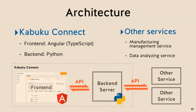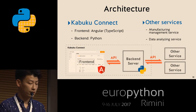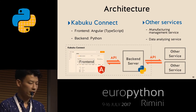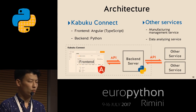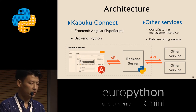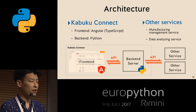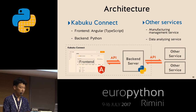This is the system architecture. In CubConnect there are two big parts: the front end implemented with Angular and TypeScript, and the back end implemented with Python. CubConnect also connects to other services such as a manufacturing management service — enabling factories to manage orders, payments, and quotations — and a data analyzing service that processes CAD data in both 2D and 3D to calculate size and volume for quotations.